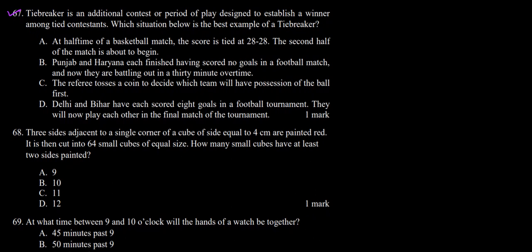Question 67 says: a tiebreaker is an additional contest or period of play designed to establish a winner among tied contestants. So a tiebreaker is basically an additional contest or game played to determine the winner among tight contestants. In a competition, if two or more contestants have tied scores, a tiebreaker match determines the winner. Now, which situation below is the best example of a tiebreaker?